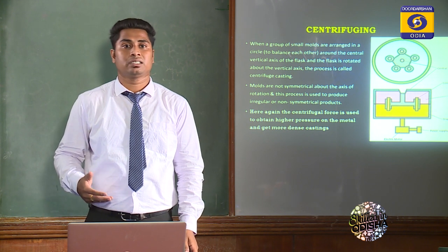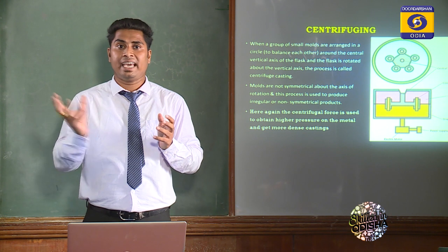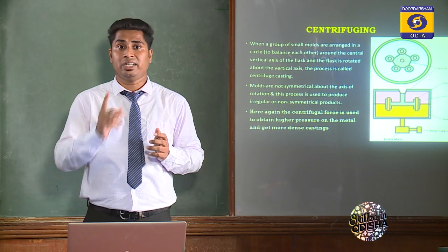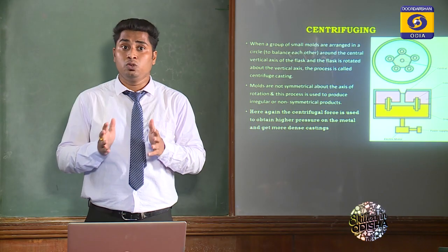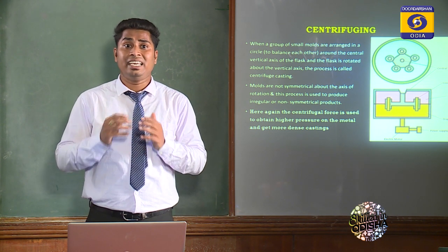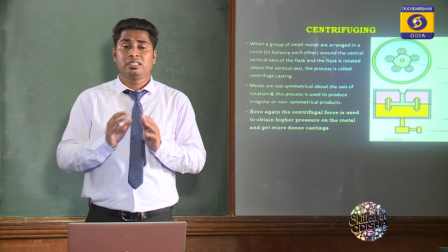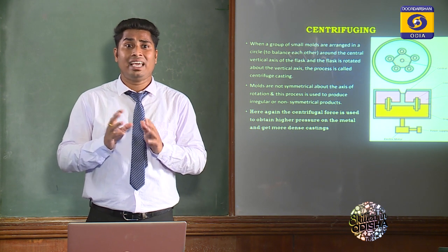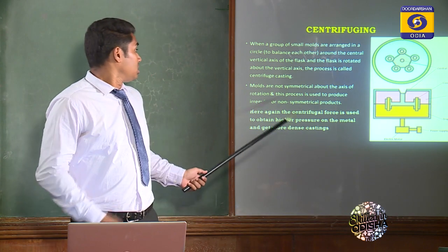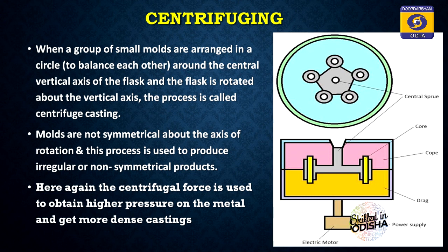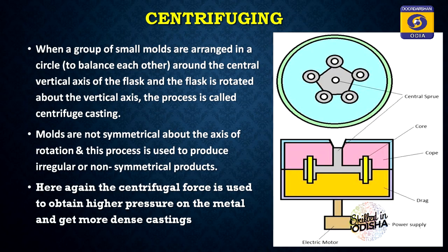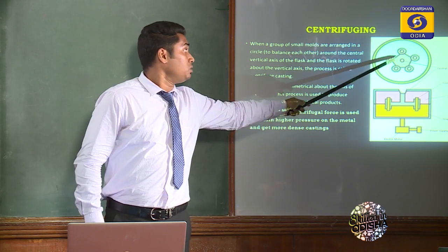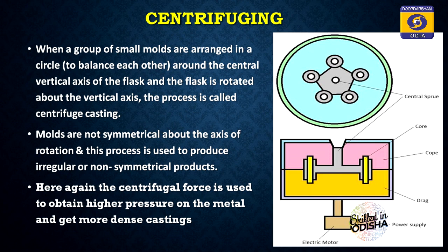In the Centrifuging Process, small molds are arranged in a circular way to balance each other with respect to a central vertical axis, and the flask is rotated around this central vertical axis. This process is used to produce products which are irregular and not axisymmetric — that is the key difference. It produces very dense castings.